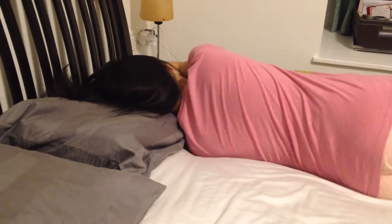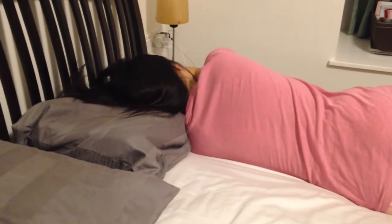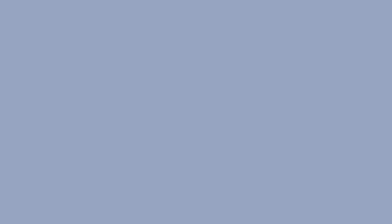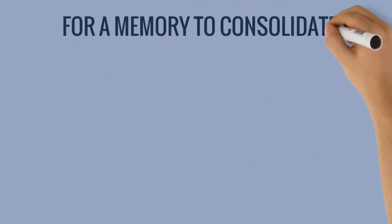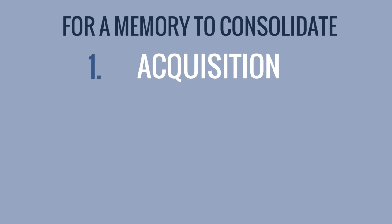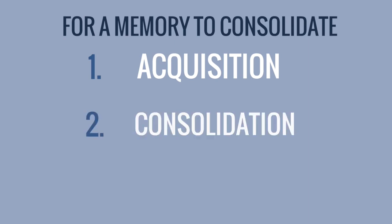Lack of sleep or disruption of sleep can cause changes and interferes with these cycles. For a memory to consolidate, three functions have to occur. There are acquisition, which is the learning or experiencing of something new, consolidation, which allows the memory to become stable in the brain, and recalling, which is the ability to access the memory later in life.